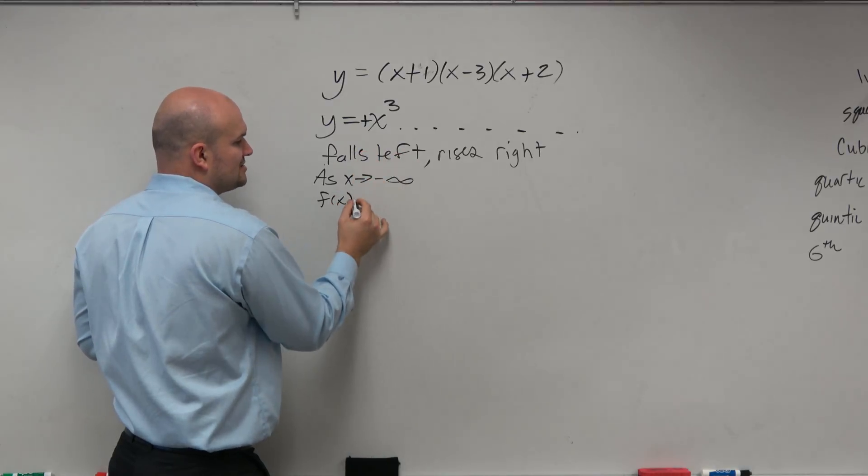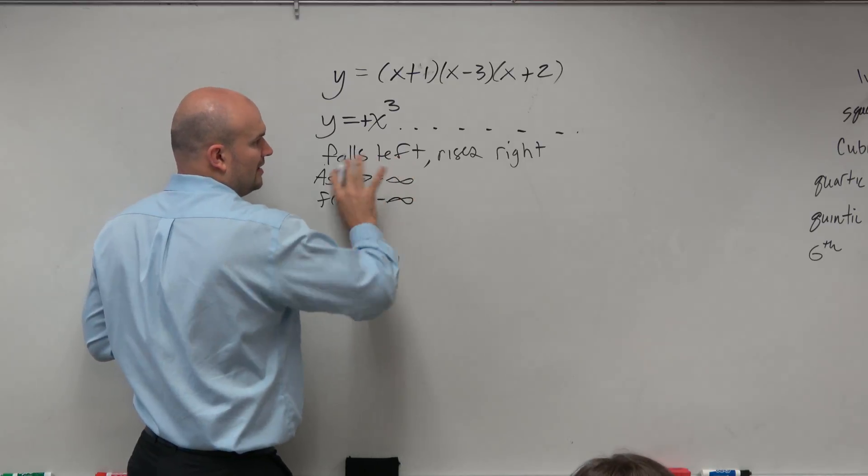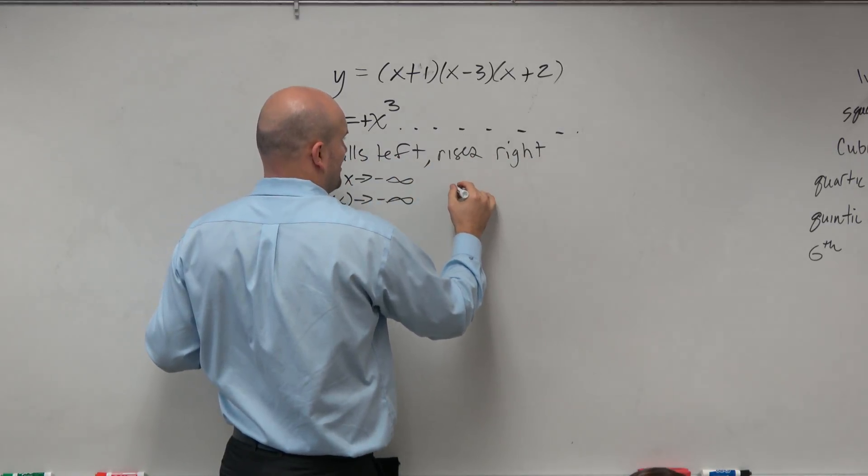F of x falls, so that means the y values, the output values, go towards negative infinity. And since I'm going to the right, I would say as x goes towards infinity.